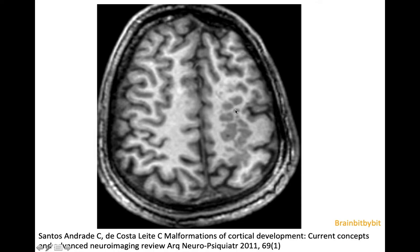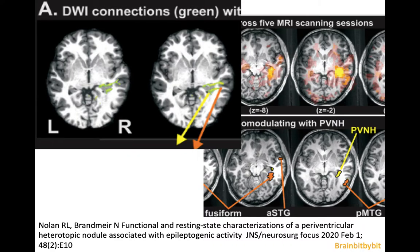In this unilateral subcortical heterotopia, there's also abnormality of the overlying cortex. Periventricular heterotopia can be epileptogenic, but not always. The heterotopic gray matter has a function closely related to the overlying cortex, and it can communicate with the neocortex. Sometimes the epileptogenic zone is in the heterotopic gray matter, but sometimes it is in the normotopic cortex.